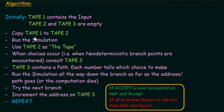The first step is to copy tape 1 to tape 2, so the entire contents of the input tape are copied to the simulation tape. Then we run the simulation from the beginning using tape 2 as the main tape. When choices occur — that is, when non-deterministic branch points are encountered — we consult tape 3. Tape 3 contains the path; each number tells which choice to make at that point.